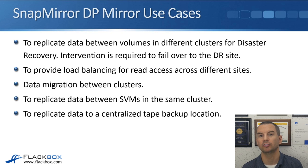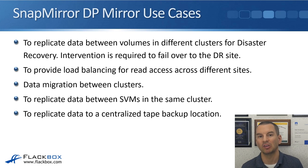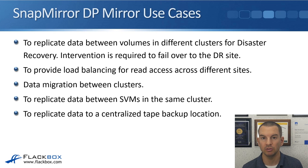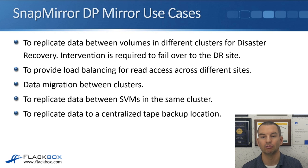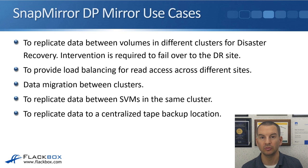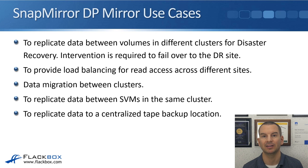If you do need to fail over to the DR site it does require manual intervention. That's a difference between this and MetroCluster, which can be configured to do it automatically. Other use cases for SnapMirror DP mirrors include load balancing for read access across different sites, data migration to move data between clusters or between different SVMs in the same cluster, and also to replicate data to a centralized tape backup location.